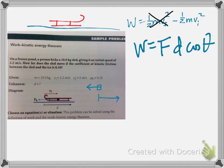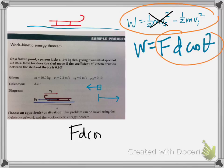So now we can take this and this, and they're both equal to W, so we can set them equal to one another. So, Fd cosine theta equals negative one-half Mvi squared.